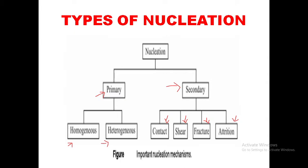The second type is secondary nucleation — the formation of new crystals from existing ones. Secondary nucleation is classified into four types: contact, shear, fracture, and attrition. More nuclei are formed by contact nucleation, by fracture and attrition. In shear nucleation, there is a high relative motion between liquid and crystal; loosely ordered faces near the crystal surface are carried into the bulk of the liquid. In fracture nucleation, crystals break by impact with the impeller. In attrition nucleation, small crystals are formed which grow to a large size in the supersaturated solution.